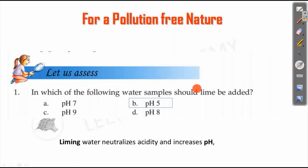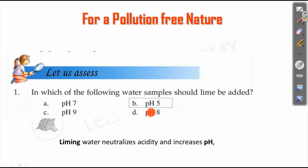pH 7 is neutral, below 7 is acidic, and greater than 7 is alkaline. pH 5 is acidic, pH 8 and pH 9 are alkaline. When lime is added to water, it neutralizes acidity and increases pH. The ideal drinking water pH range is 6.5 to 7.5. So the answer is pH 5, option B.